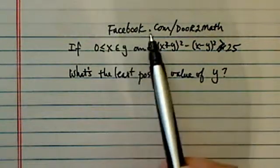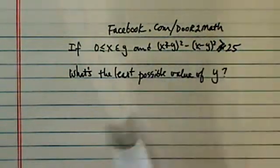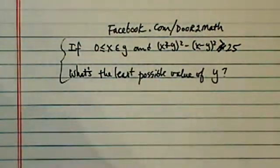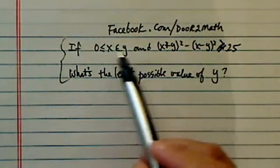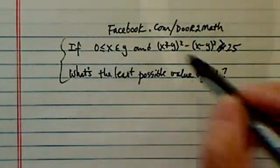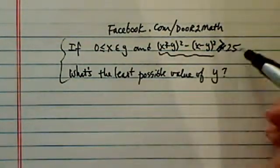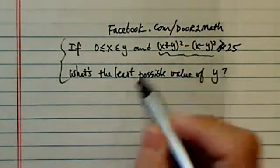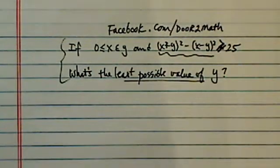I got a question posted on Facebook.com/GeorgeMath, and this is a really interesting problem. It said if x and y both are positive, and we're given a function that's bigger than or equal to 25, and the question asks, what's the least possible value of y?